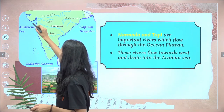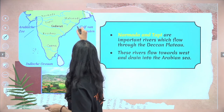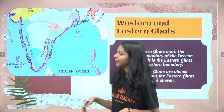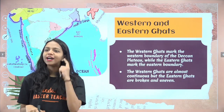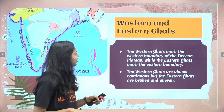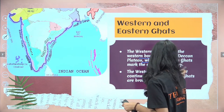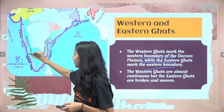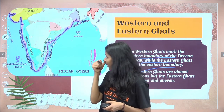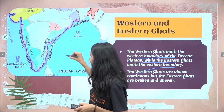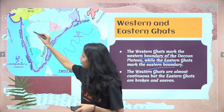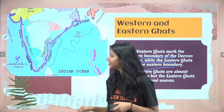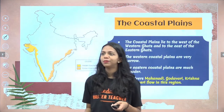The river Narmada goes towards the western side into the Arabian Sea, while the Mahanadi, Godavari, Krishna, and Kaveri go into the Bay of Bengal. Now let us look at the Western and Eastern Ghats. The Western Ghats mark the western boundary of the Deccan Plateau. The eastern coastal area is very broken and inundated, while the Konkan coast on the western side is quite smooth. The western coast is also called the Coromandal coast, and the eastern coast is called the Konkan coast.